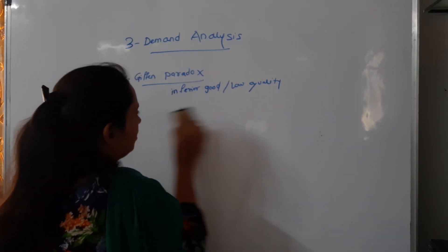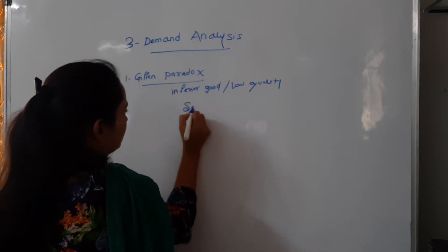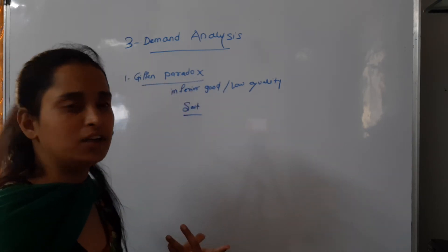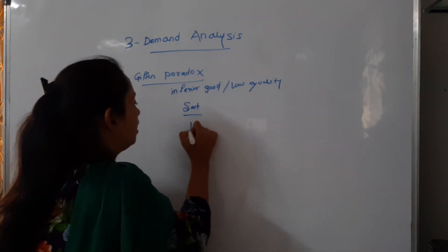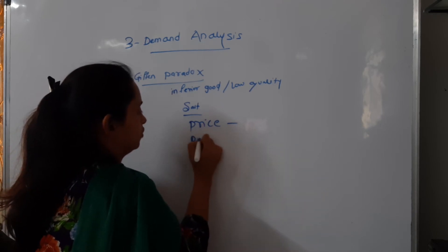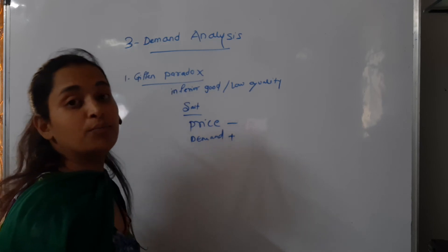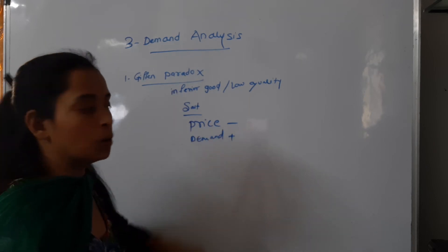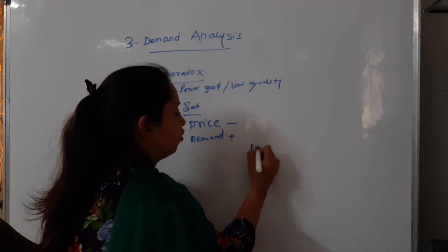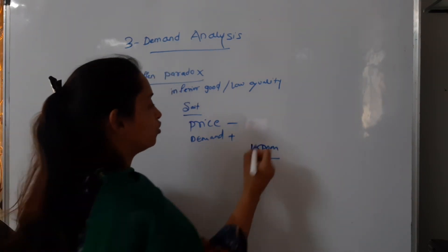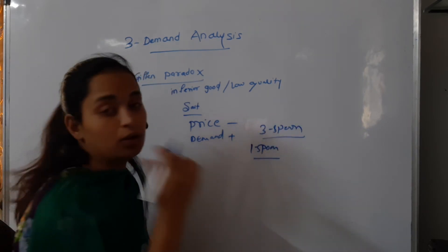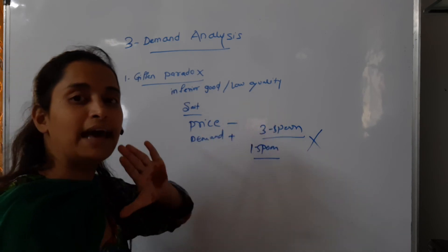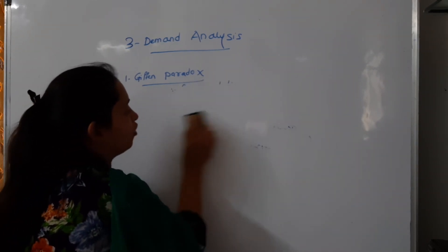For example, take the example of salt. If prices of salt decrease, as per the law of demand there must be an increase in demand. But if we add 1 spoon of salt in food, we still add 1 spoon regardless of price — we will not add more just because prices fell. That means whether prices are increased or decreased, the demand for salt is as it is — no change.